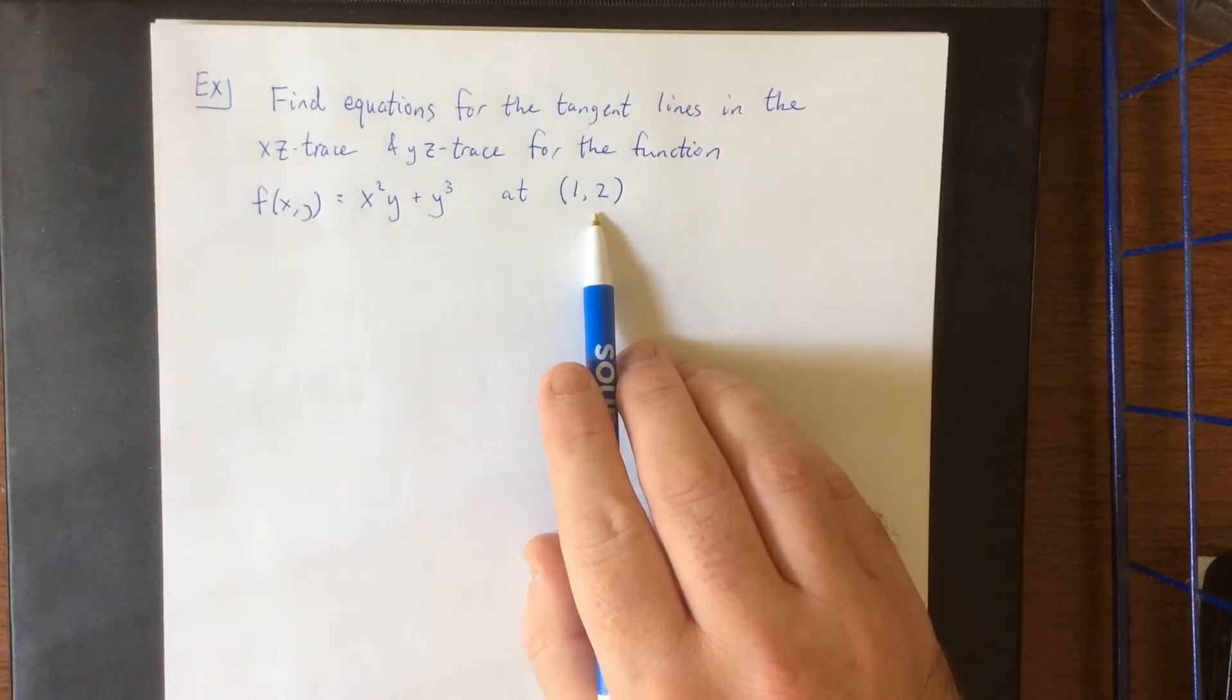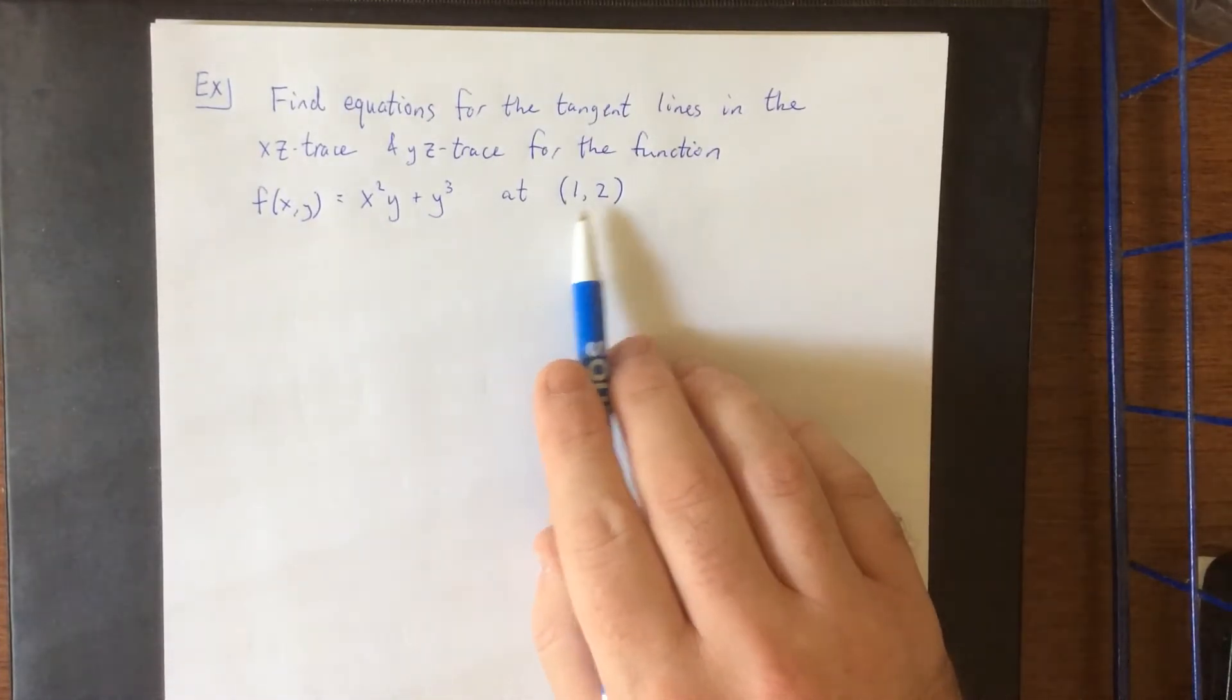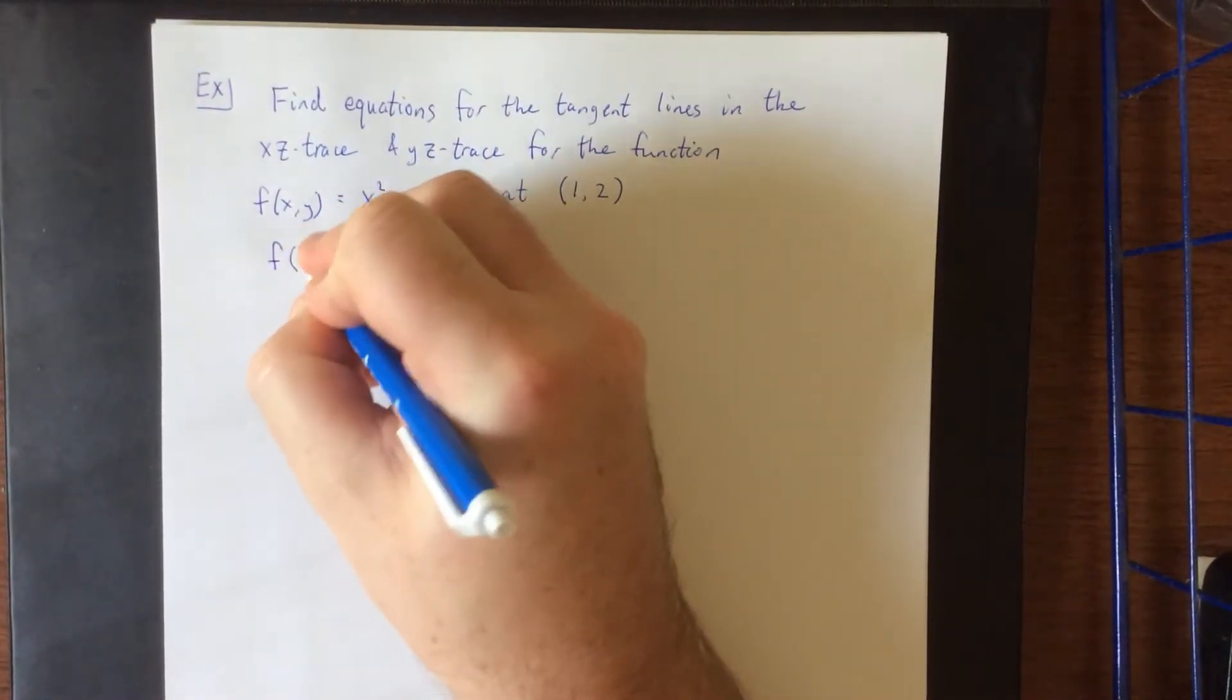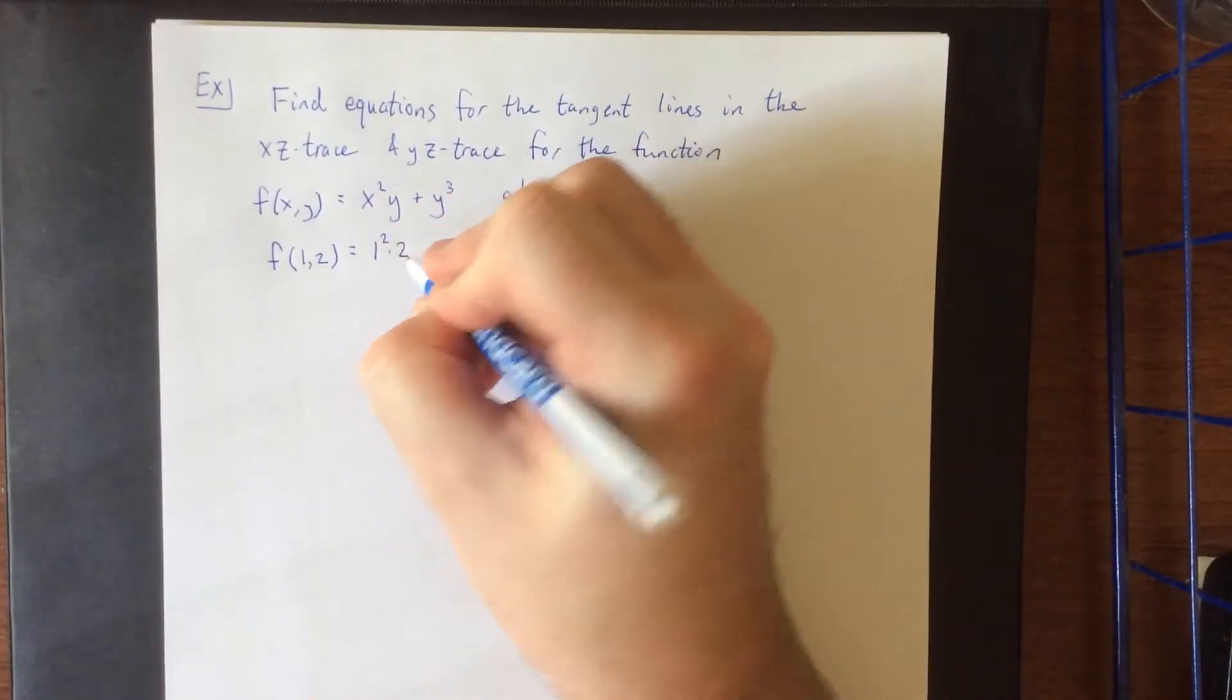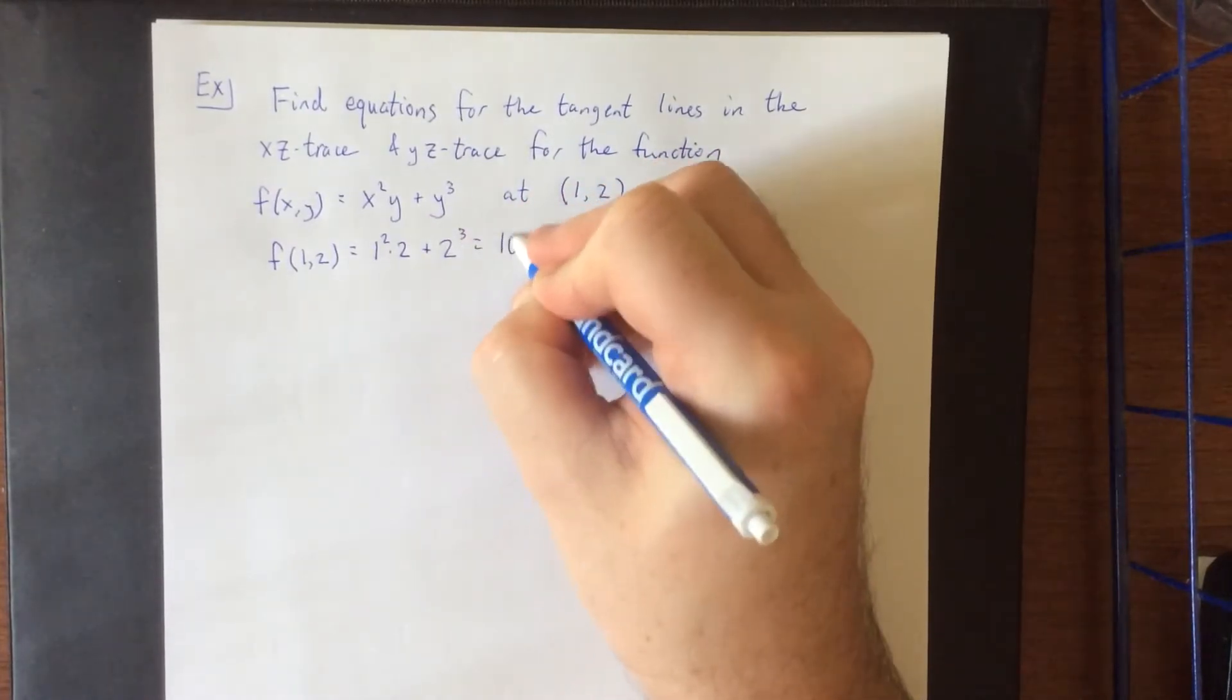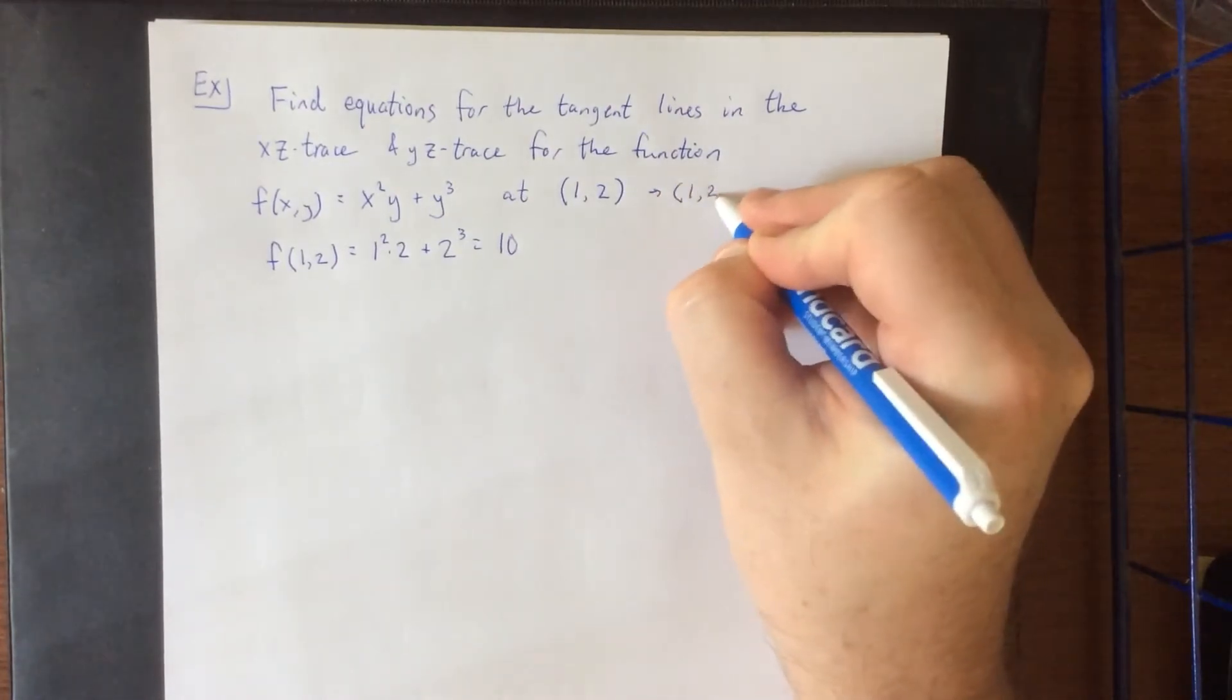Now if we are going to find equations of tangent lines we're going to need to know what point we're talking about here. So first and foremost I'm going to evaluate the function at the point (1,2). It'll be 1 squared times 2 plus 2 cubed for 10.